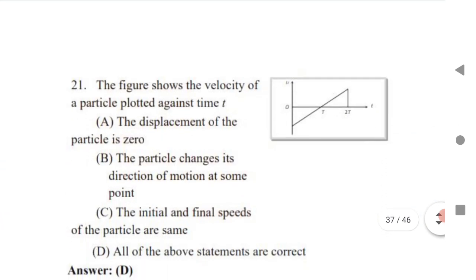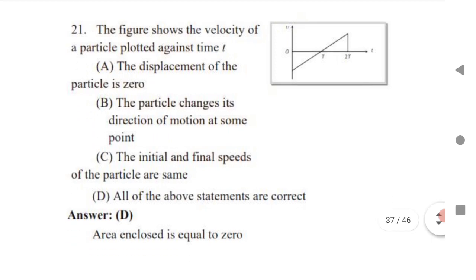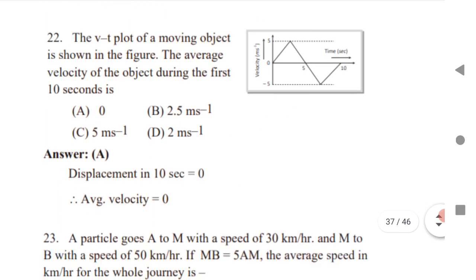This is a very simple question and mostly it can come in MSet. Next, question 28: the figure shows the velocity of a particle. When you see this figure, the displacement of the particle is zero, the velocity changes its direction of motion at some point, and the initial and final velocities are the same. So all of the above statements are correct for this figure.